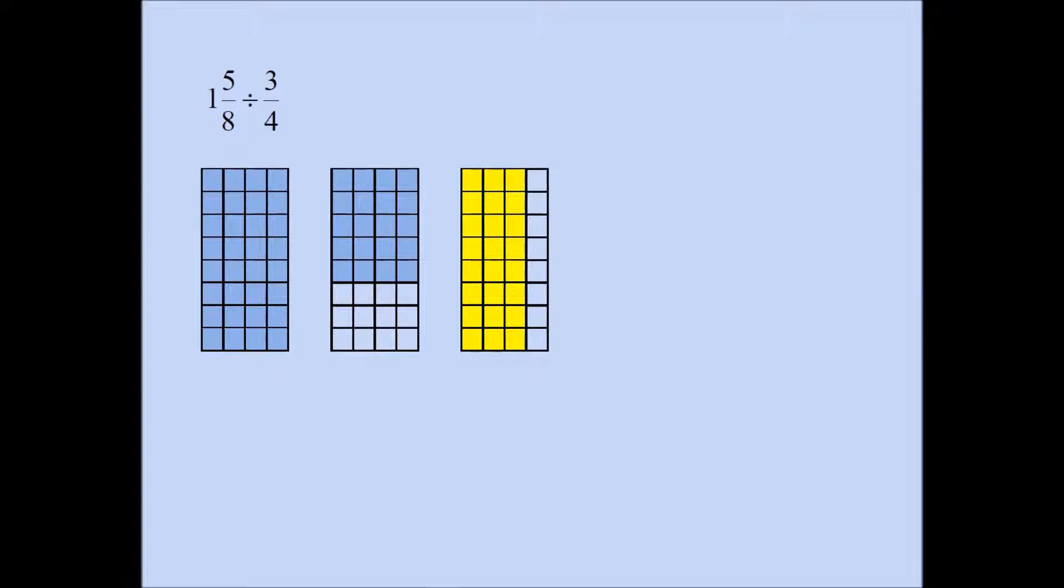Division in general means how many times the divisor goes into the dividend. This is called the divisor. 3 fourths is the divisor and 1 and 5 eighths is the dividend. Division simply asks how many times the divisor goes into the dividend.